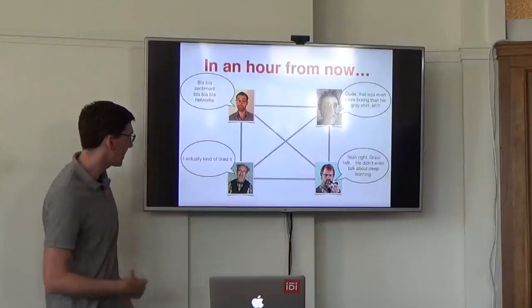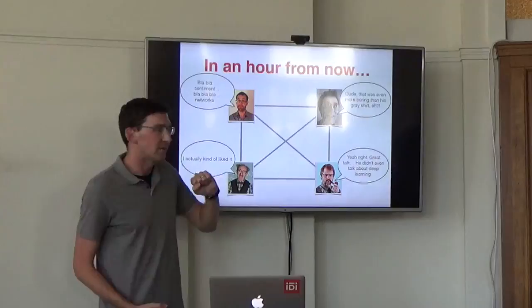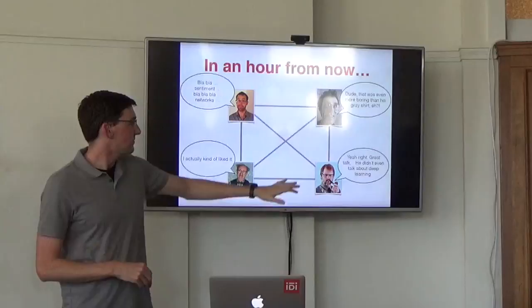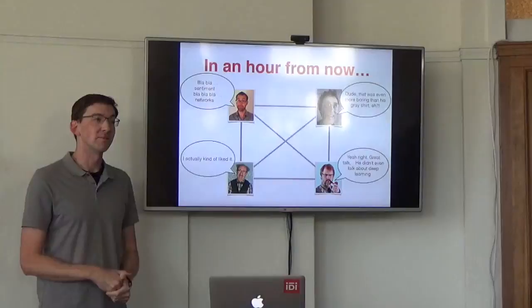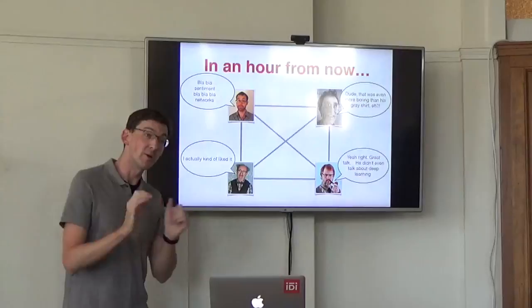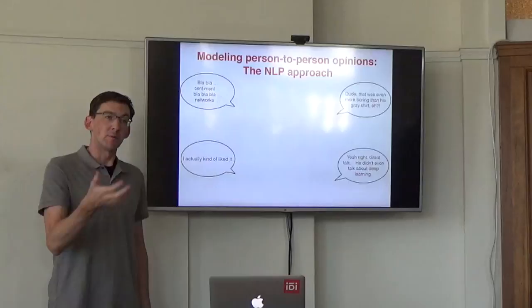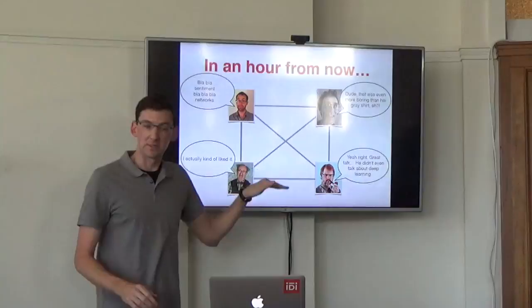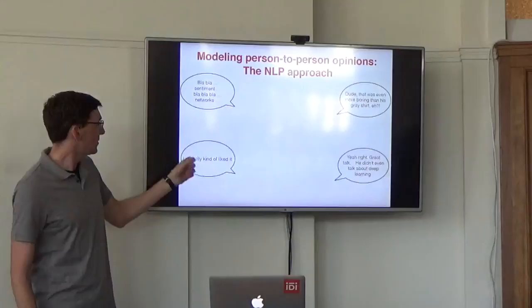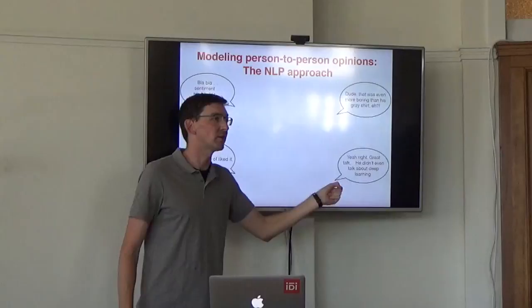So this guy says, I actually kind of liked it. That's clearly a positive thing. Dude, that was even more boring than his gray shirt. I wore a gray shirt, too. So that's clearly negative. And then we have this case. Yeah, right, great talk. He didn't even talk about deep learning. Which, depending on your perspective, is either a ringing endorsement, or a kind of sarcastic statement about the problem. We don't know. Because we don't know who this guy is. The normal approach from NLP would be to remove all that network structure and just try to do this analysis in terms of the text. I think you'd be really good at doing it for this and this. And you'd be really lost at this point. Because it's just not a fact about that text, whether it's positive or negative. It can be read both ways.